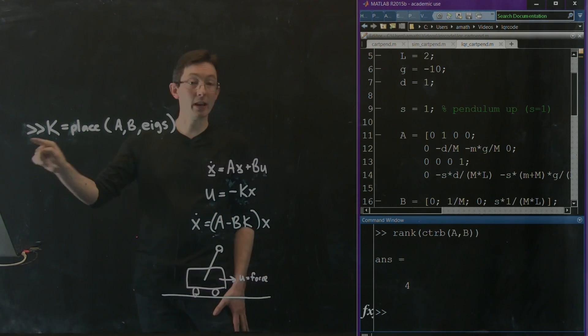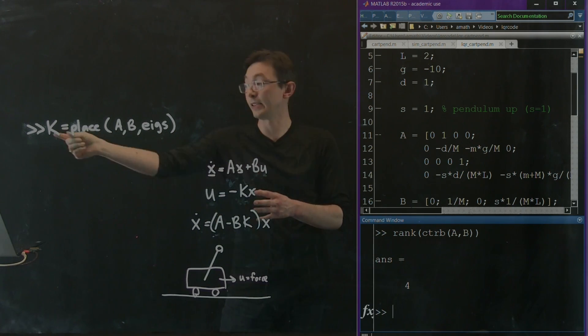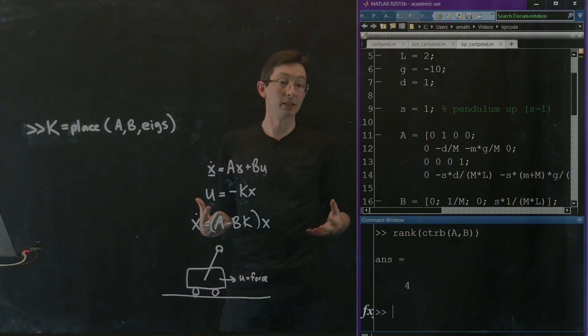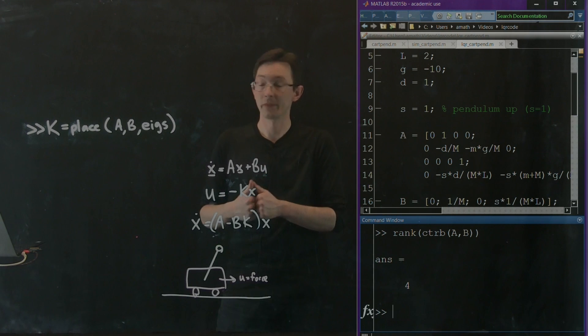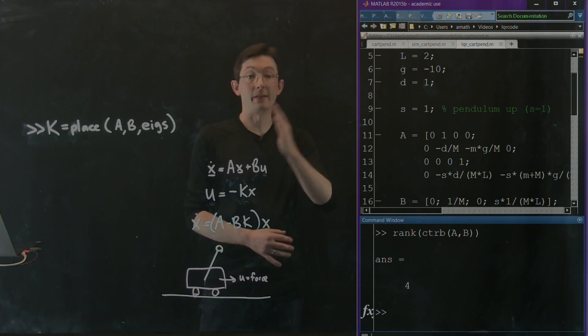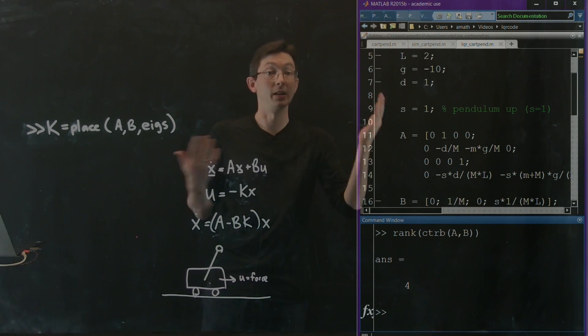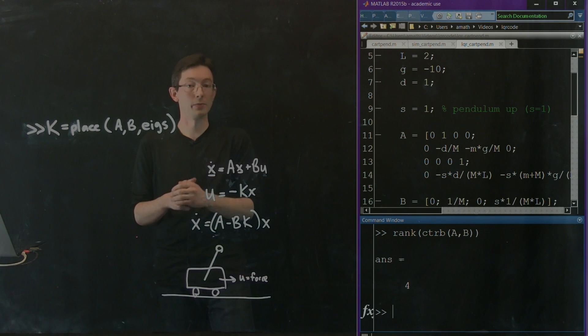And it's one line of MATLAB where you specify the eigenvalues and it will find this gain matrix k to move your system to those eigenvalues. We then take that control law, apply it to the full nonlinear system, and we show that in fact we can stabilize this unstable inverted pendulum configuration, which is really cool.